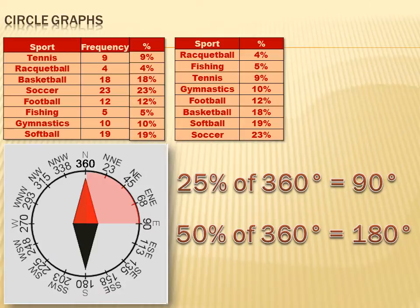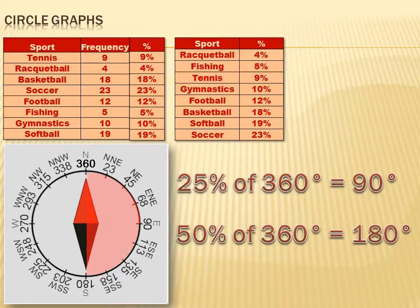How about 50%? If 50% was the number I wanted to show, 50% of 360 degrees is 180 degrees. So I could shade in 180 degrees, and it would show that half of my circle was shaded in, and that communicates pretty well.